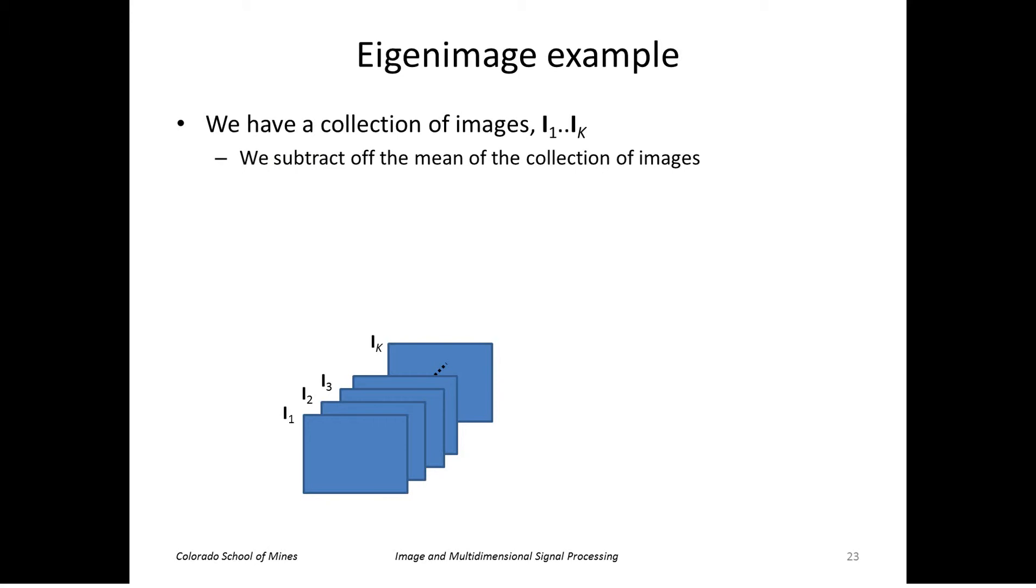All right, let's move on now to the other example of using PCA to analyze images. This is where we use the vector to represent an entire image instead of a single pixel. So let's say we have a collection of images, i1 through ik like this. We subtract off the mean of each one. Next, we put these images into column vectors.